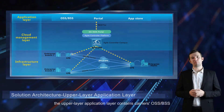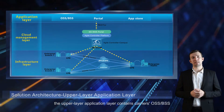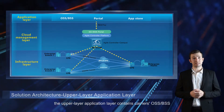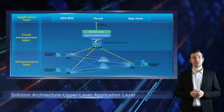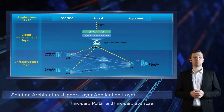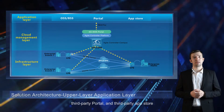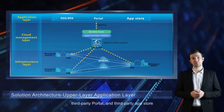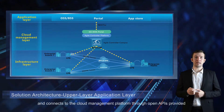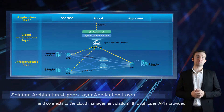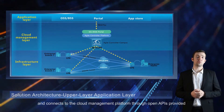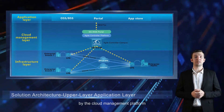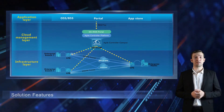The upper layer application layer contains carriers, OSS, BSS, third-party portal, and third-party app store, and connects to the cloud management platform through open APIs provided by the cloud management platform.